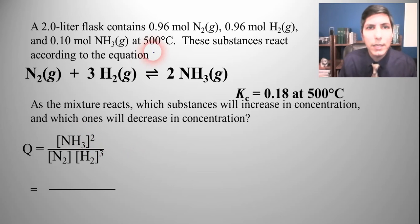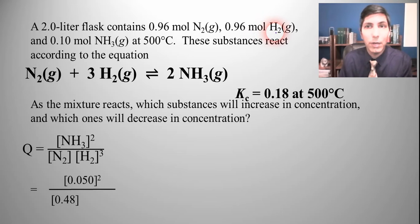Now we're going to plug the numbers in. So NH3, we have to actually calculate the molarity, right? So it's 0.1 moles divided by 2 liters, so that's 0.05 molar squared. Over nitrogen, 0.96 moles divided by 2 liters gets us 0.48, and the mole value for hydrogen is the same but we have to cube it. So now we calculate the Q, and it looks like our value for the reaction quotient is 0.047.